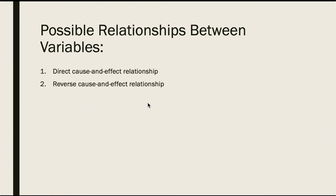Second is a reverse cause and effect relationship — that is, y causes x. For example, suppose a researcher believes excessive coffee consumption causes nervousness, but the researcher fails to consider that the reverse situation may also occur: it may be that an extremely nervous person craves coffee to calm his or her nerves. So that's the reverse cause and effect relationship.